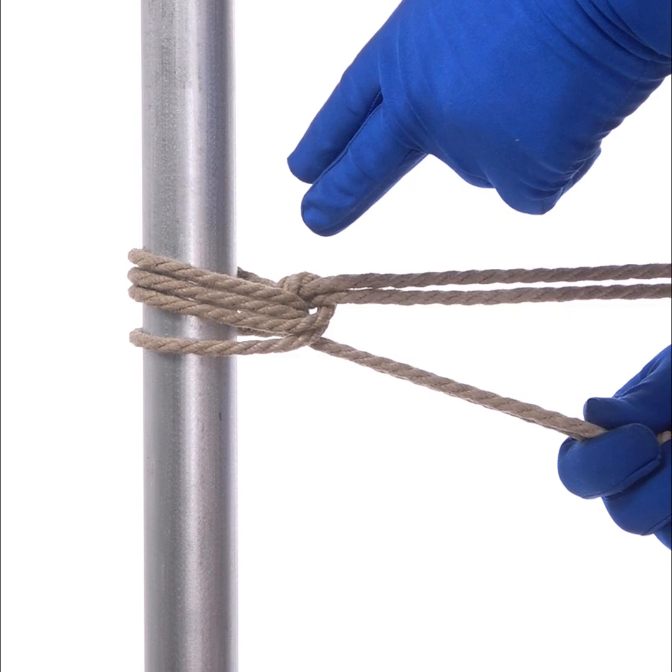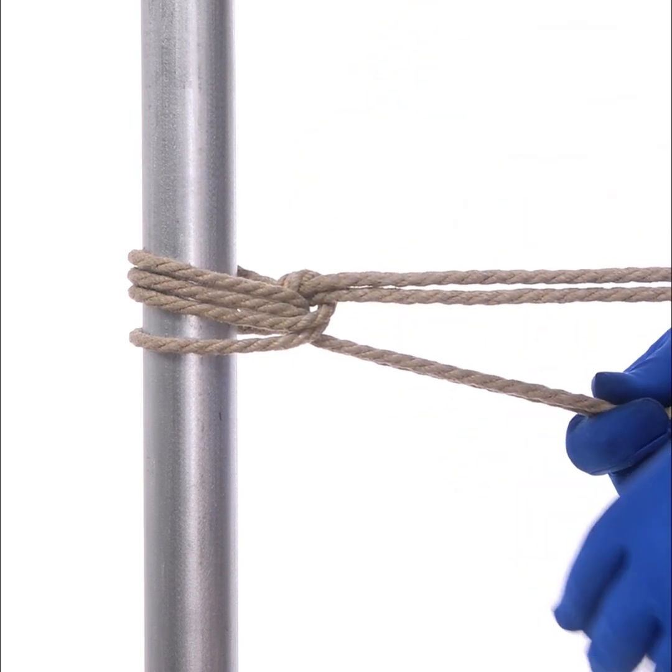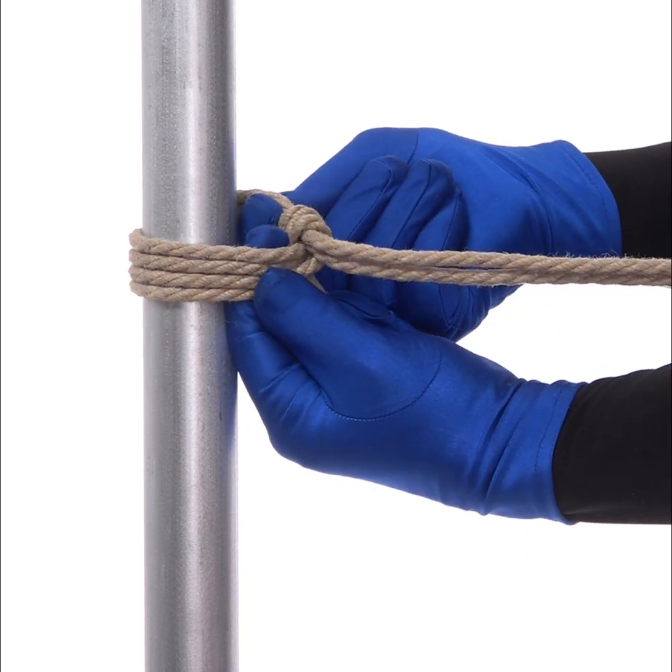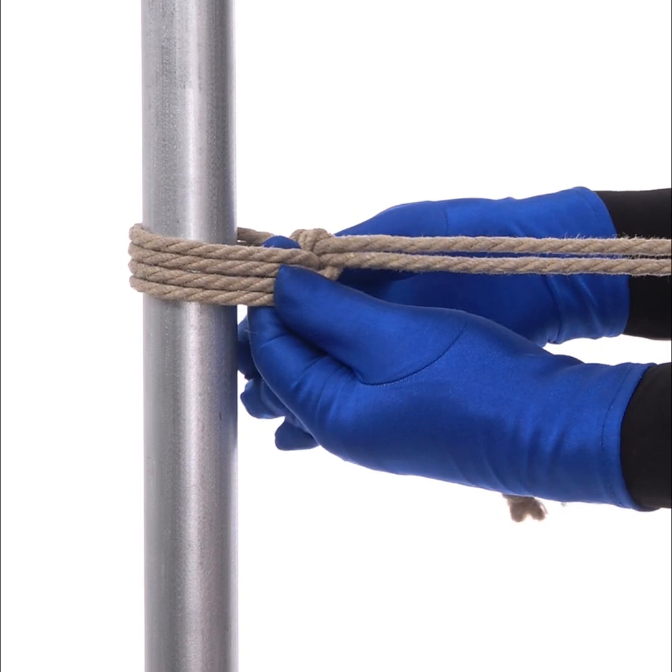So that is the main difference between the round turn two half hitch and the anchor hitch. With the anchor hitch, that first half hitch is going inside of that cuff of rope that's going around the thing you're anchoring to.